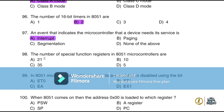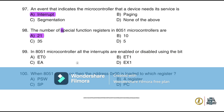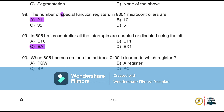Question 98: The number of special function registers in the 8051 microcontroller is 21. Question 99: In the 8051 microcontroller, all interrupts are enabled or disabled using a bit called EA. Question 100: When the 8051 comes on (resets), the address 0x0000 is loaded into the program counter (PC).